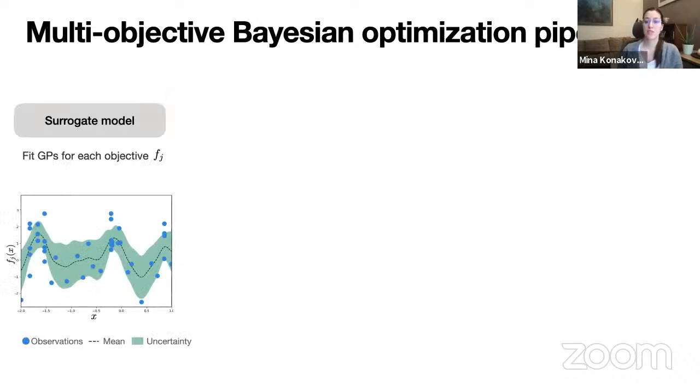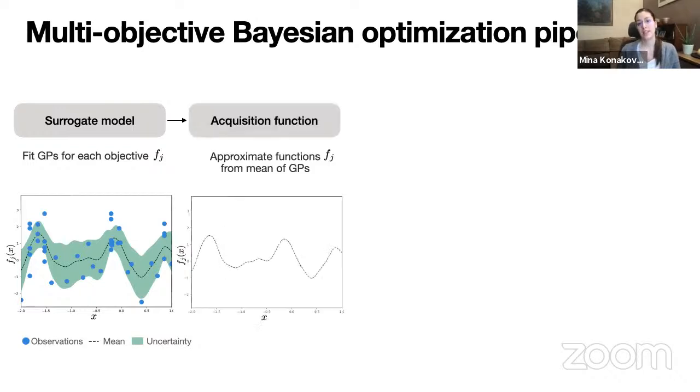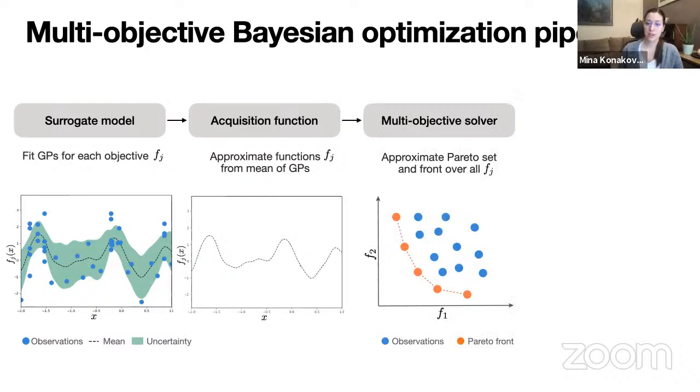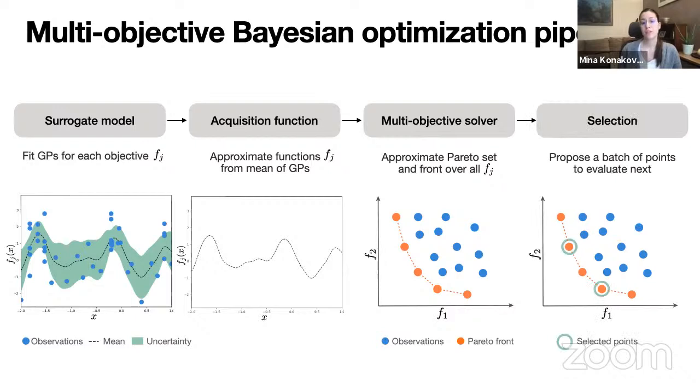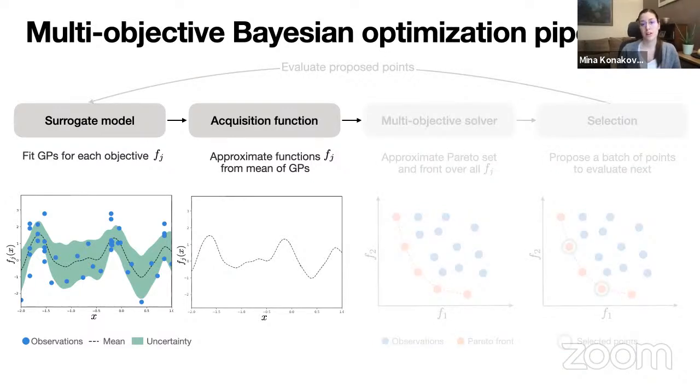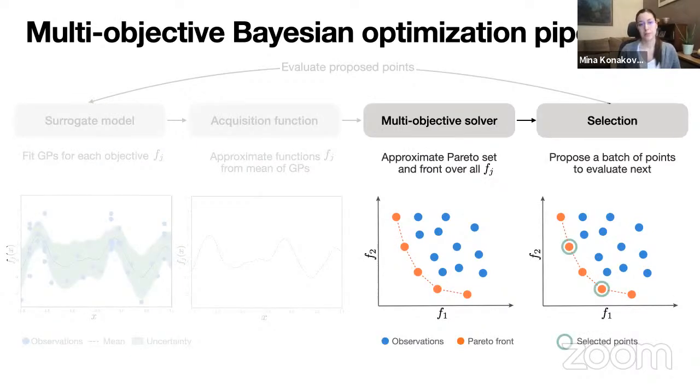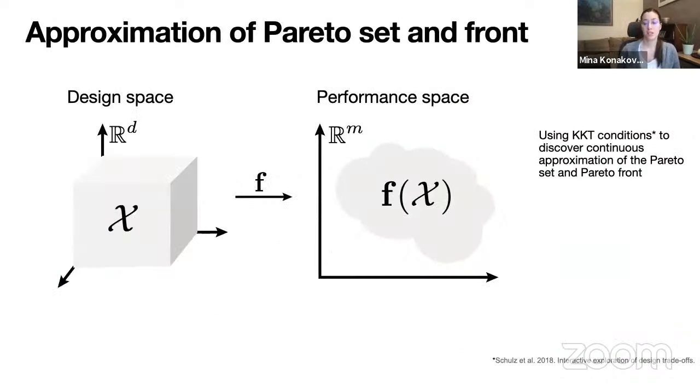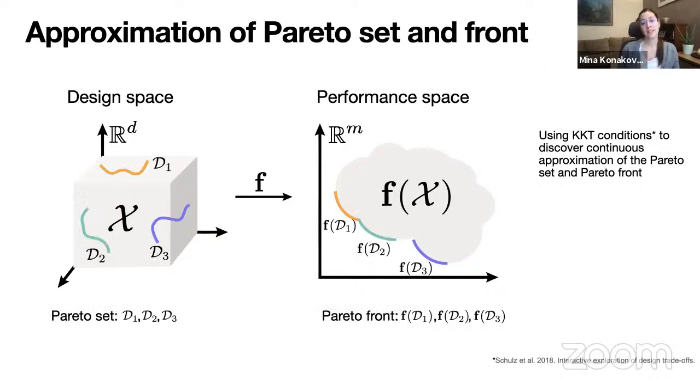The answer can be found in multi-objective Bayesian optimization. We develop an algorithm that uses a standard Bayesian optimization pipeline, but with several improvements to the components. First, we fit the Gaussian process on the set of input observations for each objective independently. We then extract the approximations of the objectives by simply taking the means of the fitted Gaussian processes. And then we search for the Pareto set in front of these objective approximation functions. And from that Pareto front, we select a batch of points to evaluate next. And we iterate through all the steps until some stopping criteria is met. The first two steps are commonly used in other Bayesian optimization methods. Our main contribution lies in the last two steps of the pipeline. And while other methods typically obtain a discrete and sparse approximation of the Pareto front, we use the so-called KKT conditions that once we find a single point on the Pareto front, they let us quickly discover large and continuous regions of Pareto optimal solutions around them and the corresponding Pareto set.